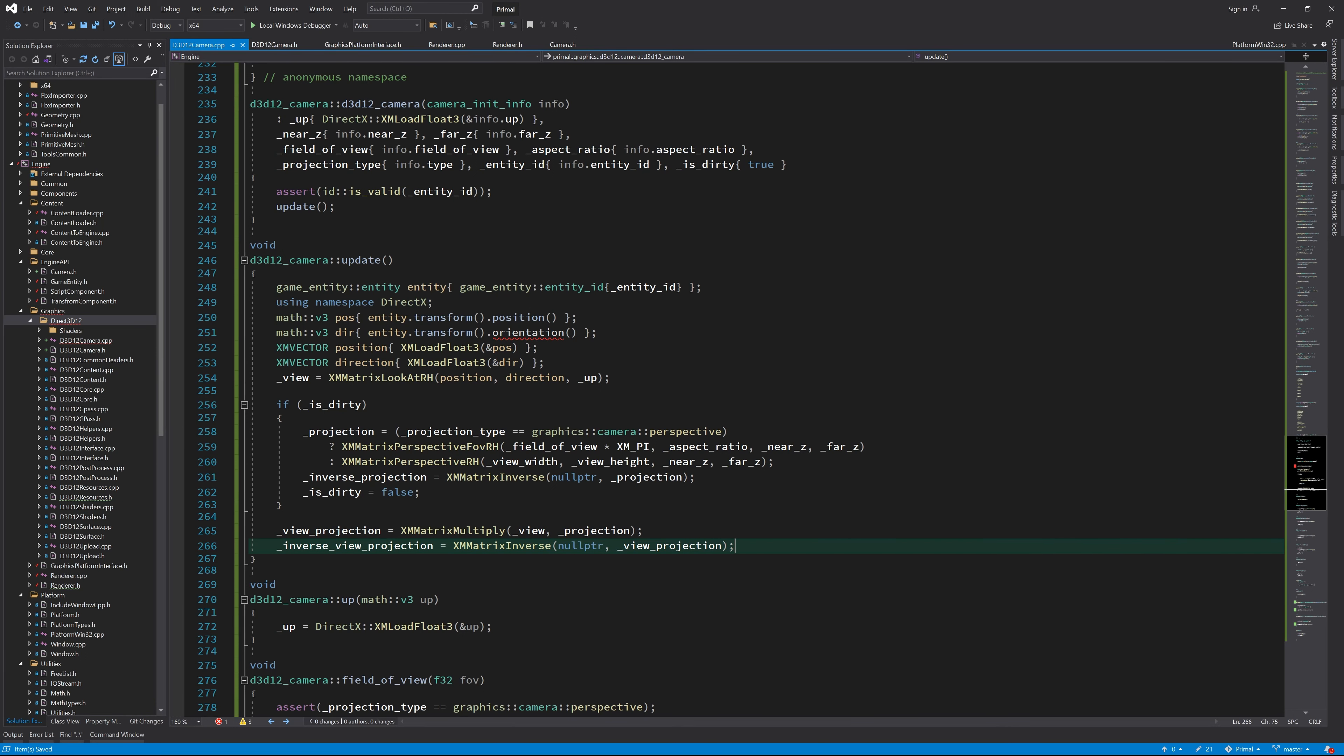Hello everyone and welcome to the game engine programming series where we write a game engine from scratch. In the last video we finished writing the camera class where the view and projection matrices are calculated. I also explained the mathematics behind these matrices.